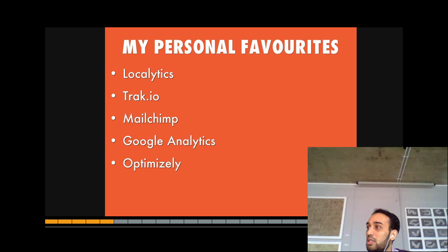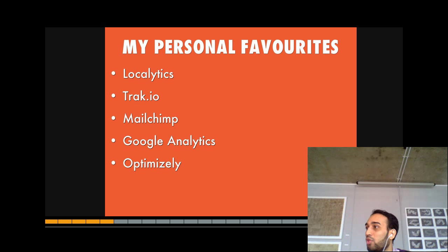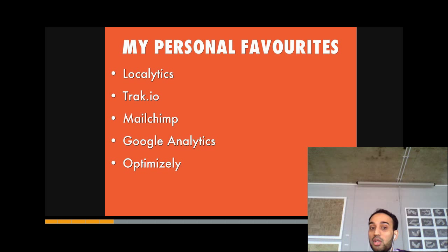Track.io is really good for getting individual analysis — you can see individually how somebody has been behaving on your website. If you can attract people by their username or Facebook account, you can see exactly how they've been behaving. On our mobile app, for example, I can see that John Smith went in, first created a new story, then wrote a line, then wrote another line, then clicked a new story, and then left. I can see individually exactly what's happening. Track.io is really good for that.